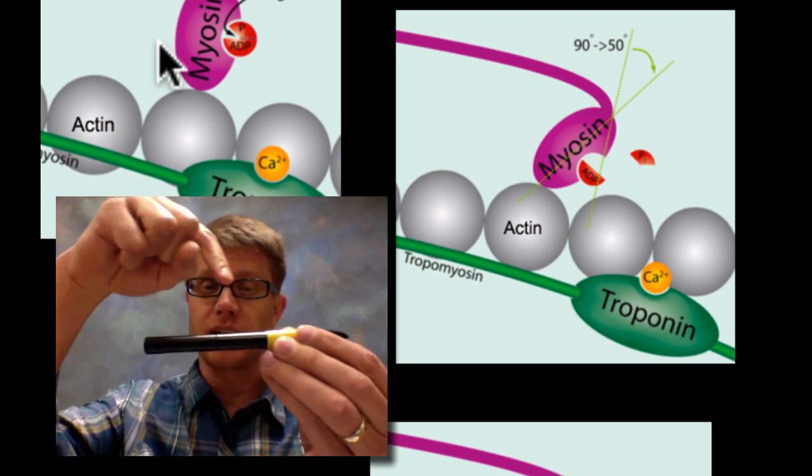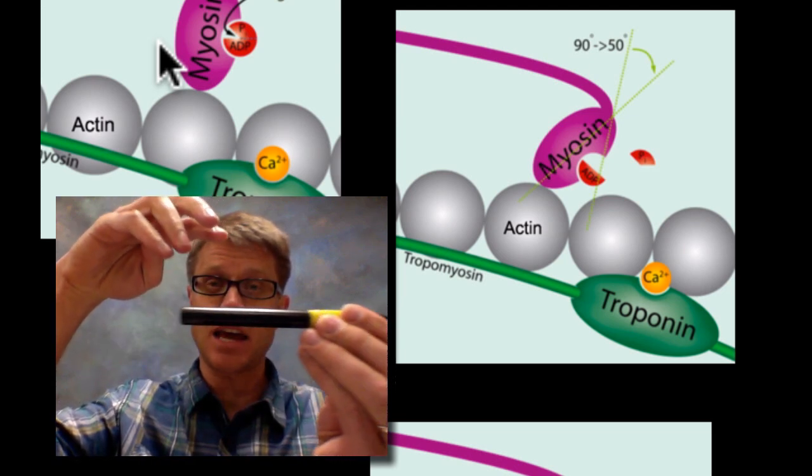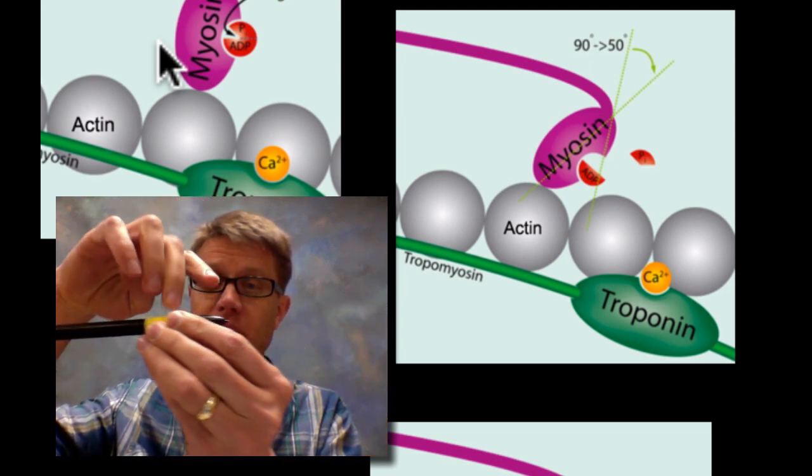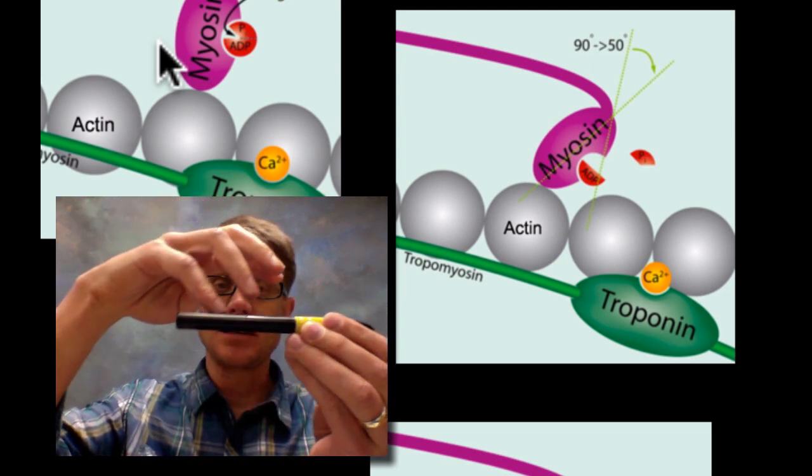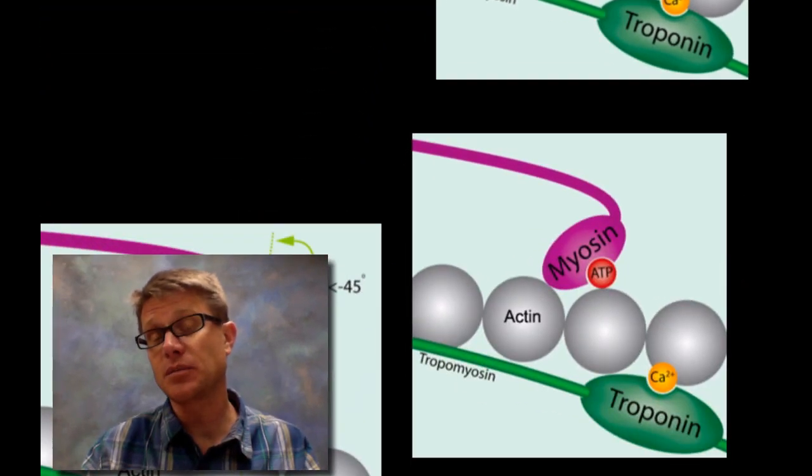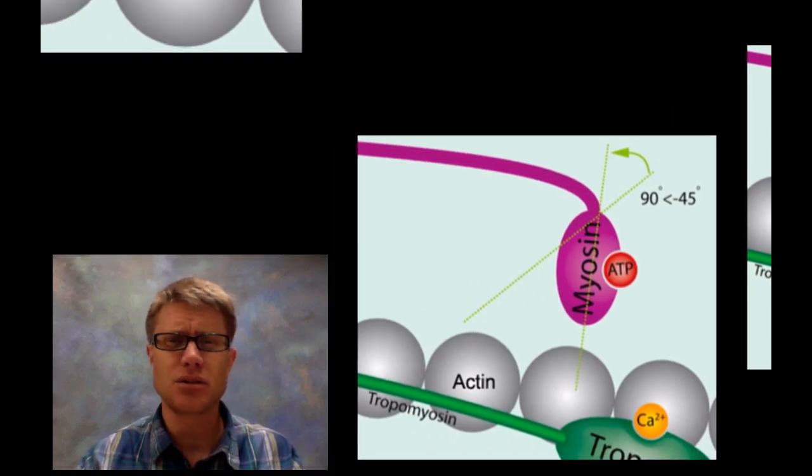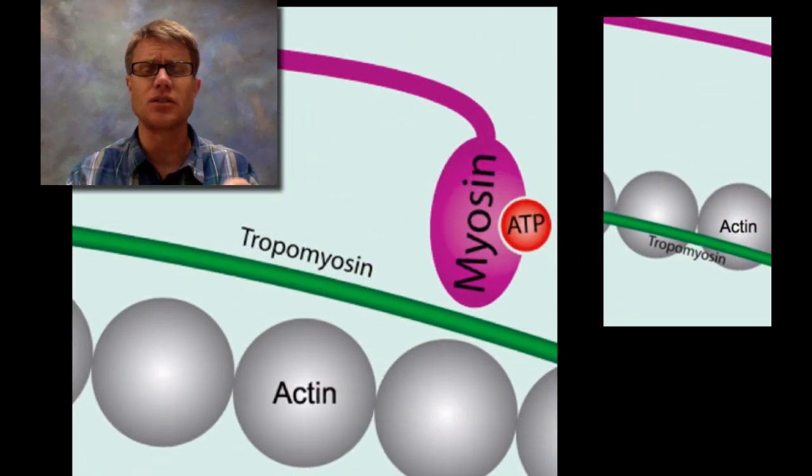And there's not only one myosin head. There's numbers of heads that are all doing this. And so basically this actin is sliding past the myosin. And as it does that, that's contracting the muscle. And so once the calcium is gone, once the ATP is gone then we can't do that. And so basically you should understand that myosin heads are trying to get onto the actin and slide the actin.